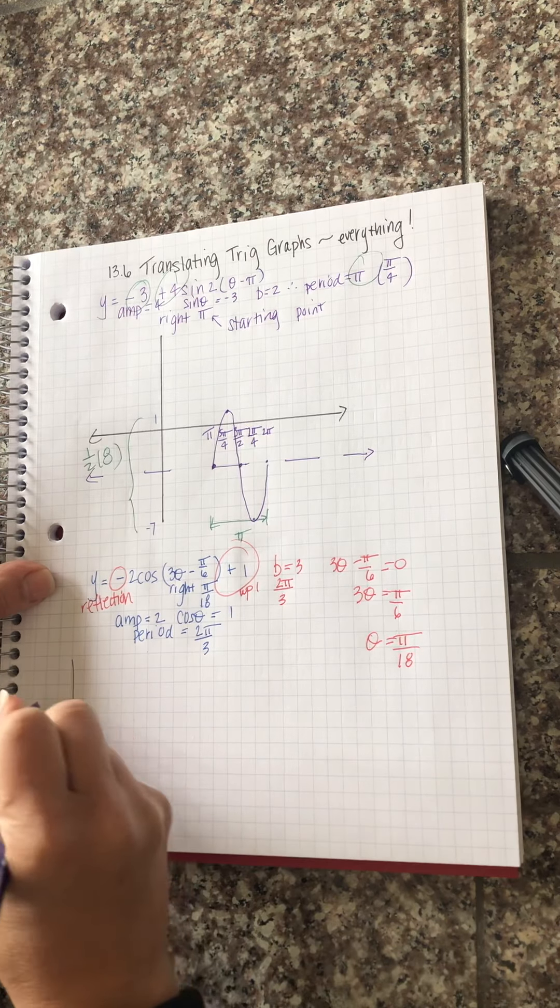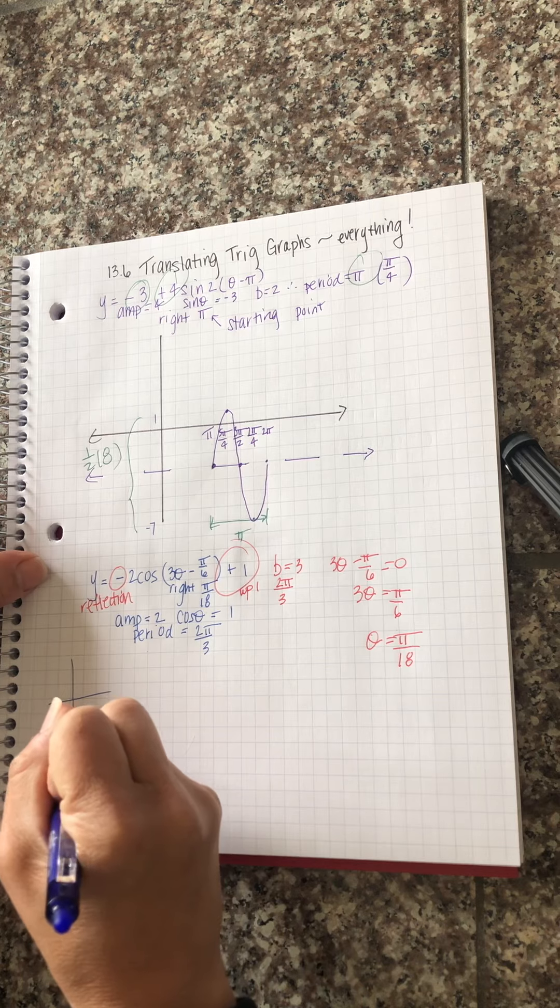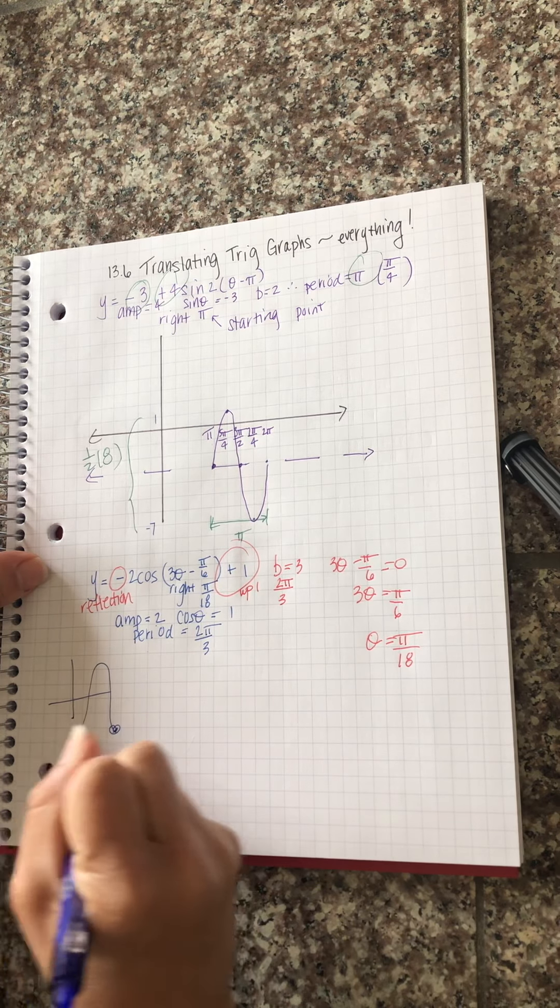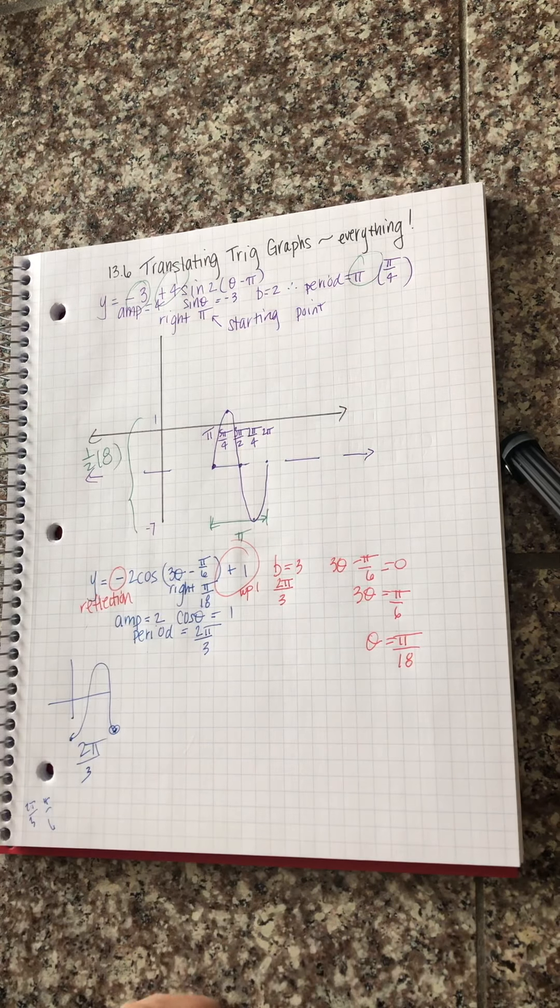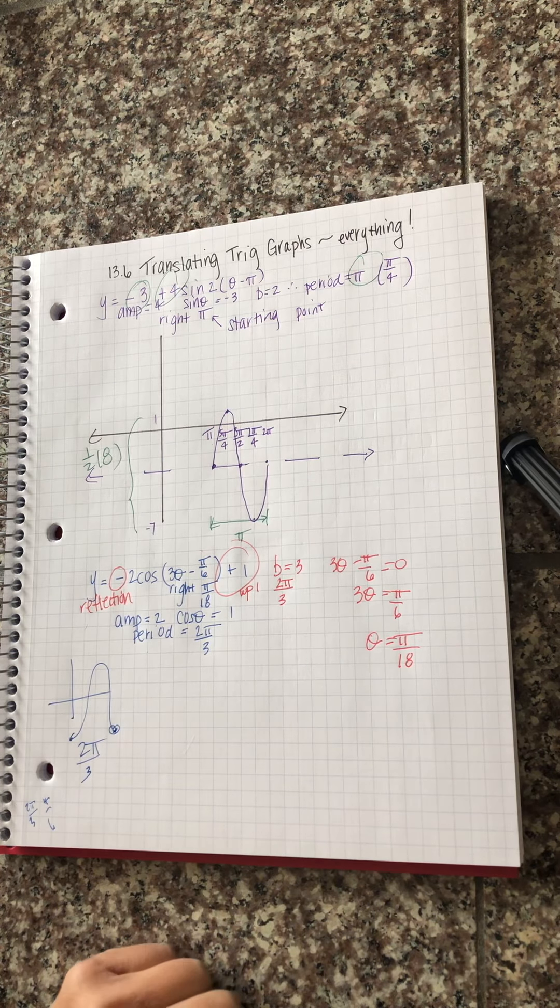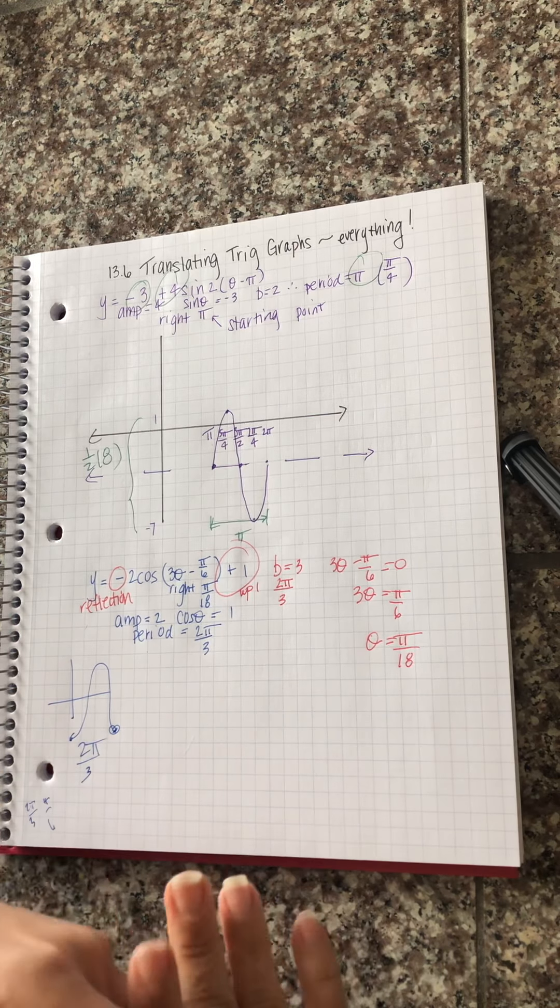Okay, so that means that when I draw this reflected cosine curve, that distance must be 2 pi over 3. I'm going to find my increments here. My increments are going to be pi over 6.